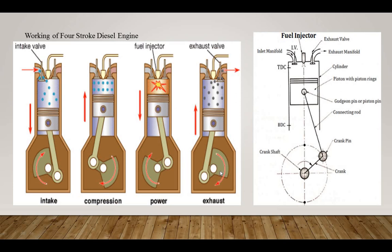In the exhaust stroke, the exhaust valve opens and the inlet valve closes. The piston travels from bottom dead center to top dead center, pushing out the combustion gases. Since the diesel engine uses a very high compression ratio, the temperature of air at the end of the compression stroke is very high and sufficient for self-ignition of the fuel. Because of this, in CI engines, a spark plug is not needed. This method of ignition is called auto-ignition. You can see the fuel injector, inlet manifold, exhaust manifold, and all components shown with the different strokes.